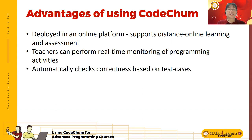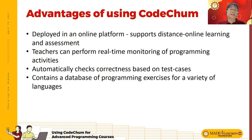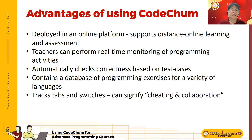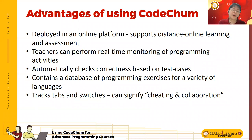It automatically checks correctness based on test cases. It contains a database of programming exercises for a variety of languages like C, C++, Java, and Python, which tracks tabs and switches. So for example, if you're programming in Cochum and you decided to search for answers in Google, it will be able to track that and count the number of times you change tabs. This is very useful for checking if students are cheating or collaborating with each other.